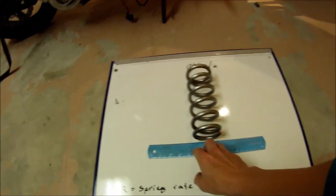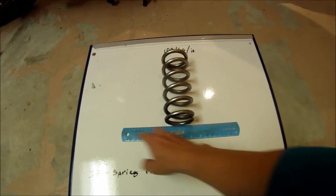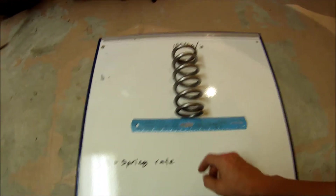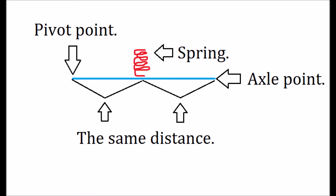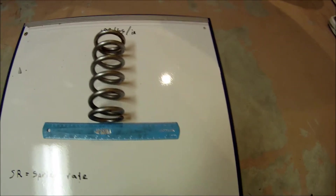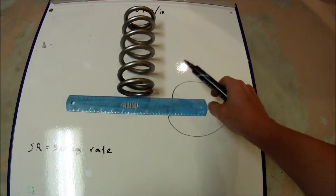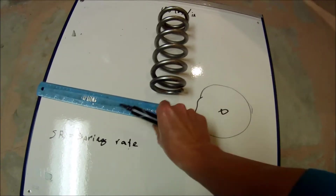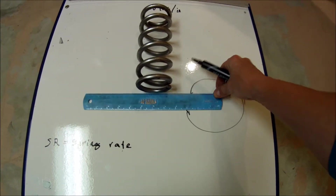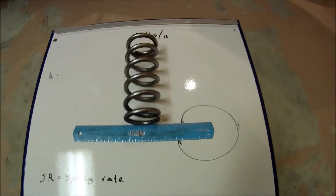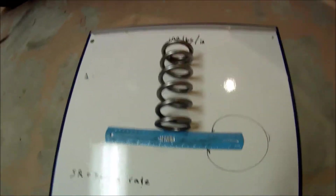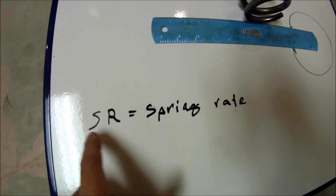But we're going to do it differently. This is going to be a swing arm — it doesn't really matter how long it is — this is going to be a spring, and the wheel is going to be right here. Let's mark it down — wheel — so we've got the swing arm setup drawn out.